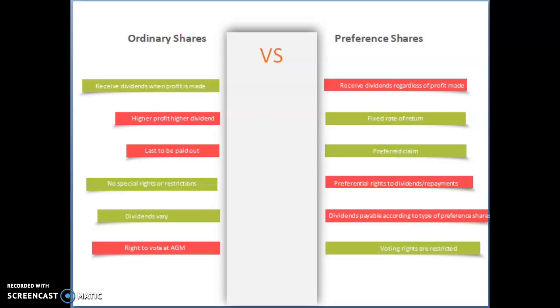With ordinary shares, you will only receive dividends when profit is made by the company. However, with preference shares, some of these types of shares, and remember there are eight types of shares, will receive dividends regardless of if the company has made profit or not.